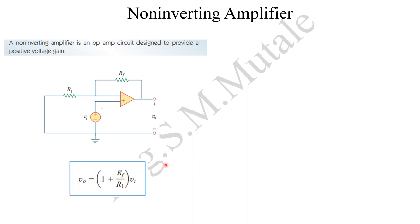The governing equation is this. Output voltage is equal to 1 plus feedback resistor over R1 multiplied by the input voltage.